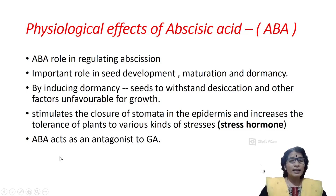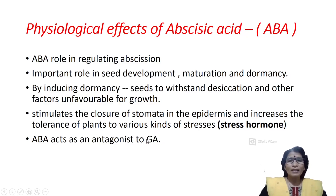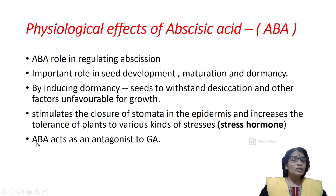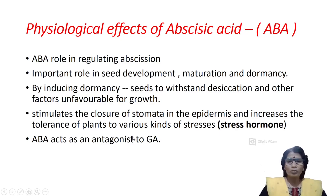Abscisic acid acts as an antagonist to gibberellic acid. GA is the short form of gibberellic acid. Gibberellic acid promotes seed germination, but abscisic acid stops seed germination. That is why abscisic acid acts completely opposite to gibberellic acid.